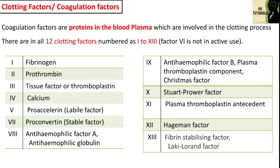Factor number 10 is the Stuart-Prower factor, and its source is the liver. Factor number 11 is also called plasma thromboplastin antecedent; its source is the liver. Deficiency of factor 11 causes hemophilia C, also known as Rosenthal syndrome. Factor number 12 is also known as Hageman factor. Factor number 13 is also called fibrin stabilizing factor, or Laki-Lorand factor.